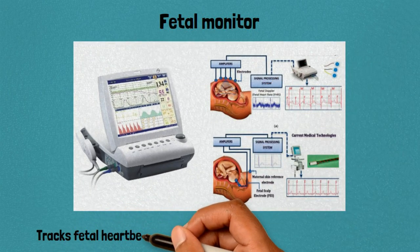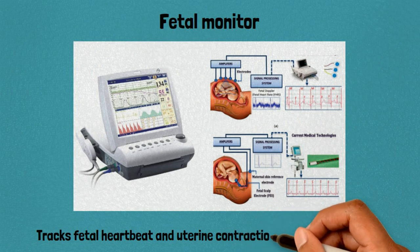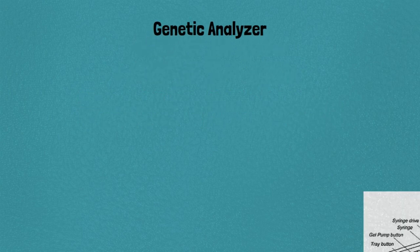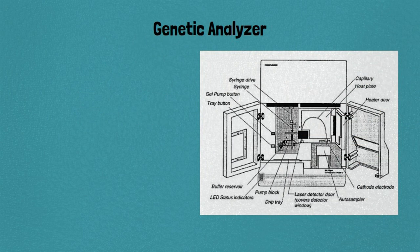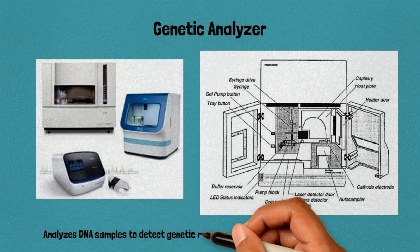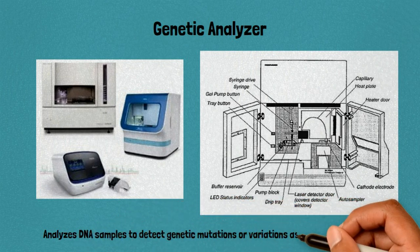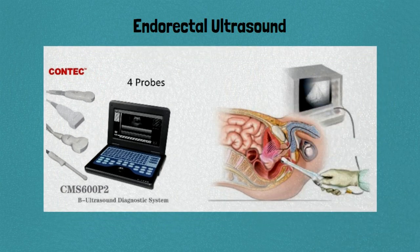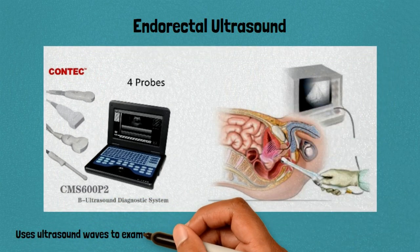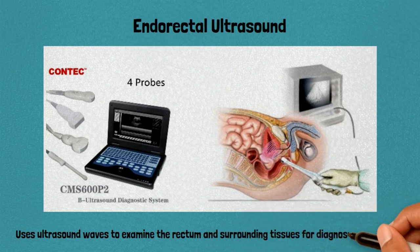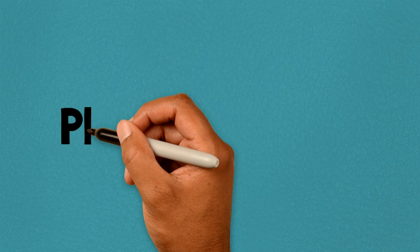40. Audiometer: measures hearing sensitivity and helps diagnose hearing loss or related disorders. 41. Fetal monitor: tracks fetal heartbeat and uterine contractions during labor and delivery. 42. Genetic analyzer: analyzes DNA samples to detect genetic mutations or variations associated with diseases. 43. Endorectal ultrasound: uses ultrasound waves to examine the rectum and surrounding tissues for diagnosing conditions.